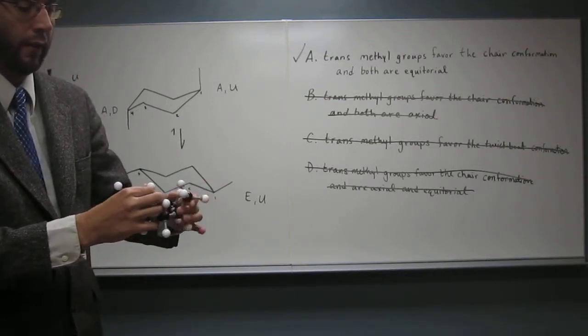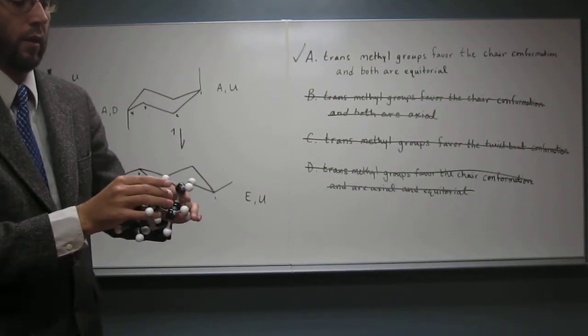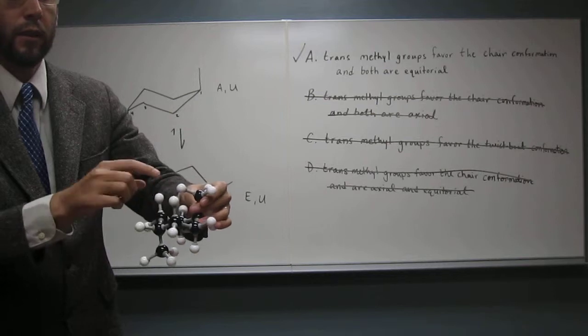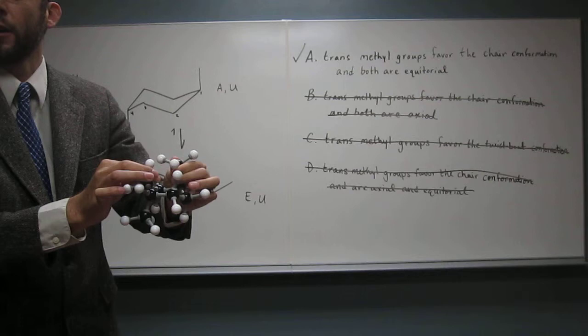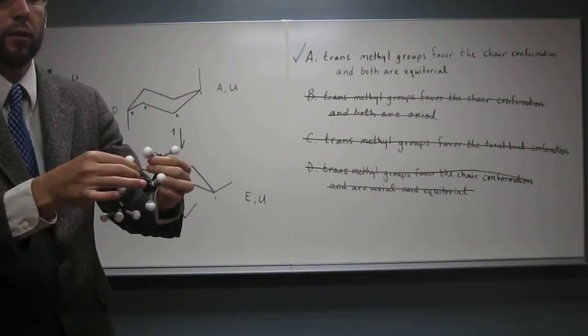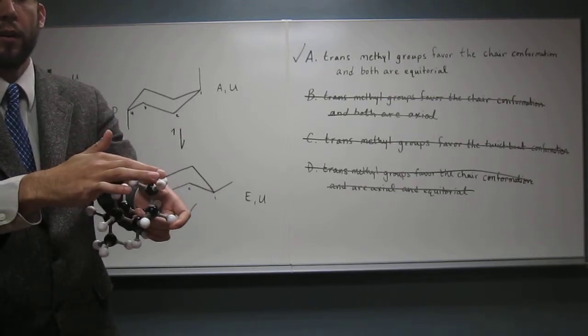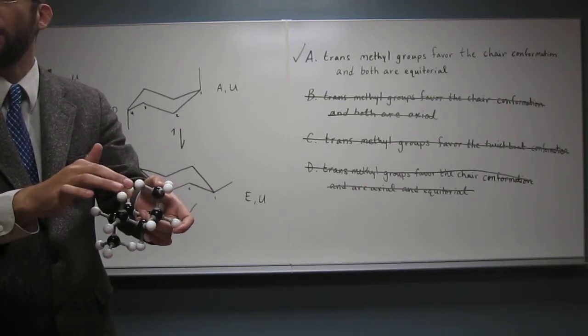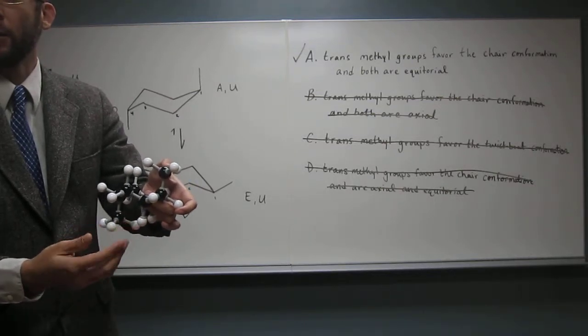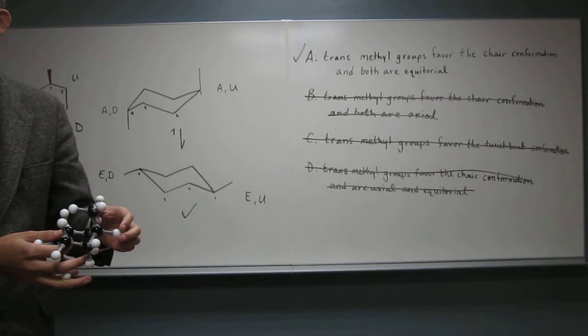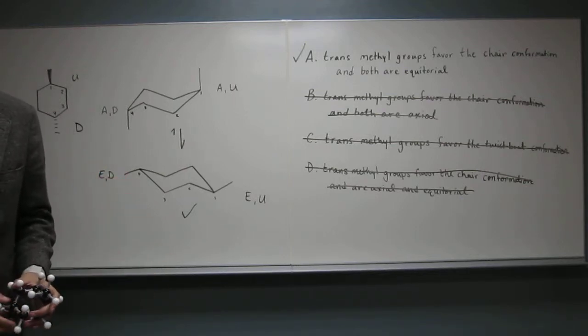Specifically, they don't have what you see, the 1,3-diaxial interaction there, that steric interaction where there's two groups trying to occupy that same place. And in fact, you've got one, two, one, three-diaxials on the top, and one, two, one, three-diaxials on the bottom. So that's quite unfavored relative to the equatorial version of this, the ring flip.